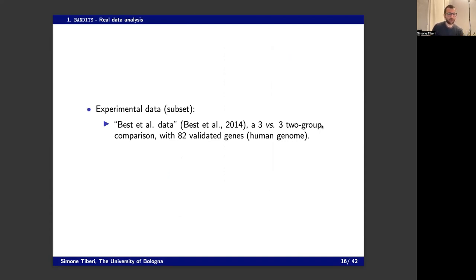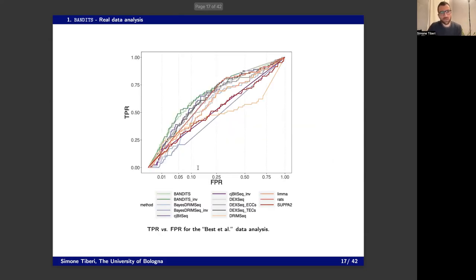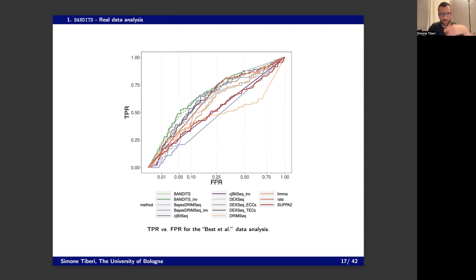We also validated on a real dataset. Real data is realistic but lacks a ground truth. Fortunately, this dataset had 82 genes validated in the lab as truly displaying differences in alternative splicing patterns. We did a ROC-like curve treating these 82 genes as true positives and the rest as negatives — a rough approximation, but still informative. BANDITS in green achieves higher true positive rate at a given false positive threshold, indicating the method recovers the right genes well.